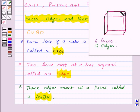One, two, three, four, five, six, seven, and eight. So that means there are eight vertices in a cube.